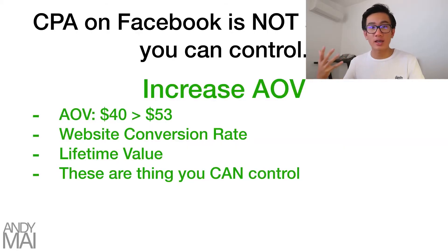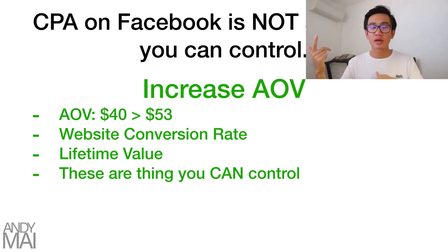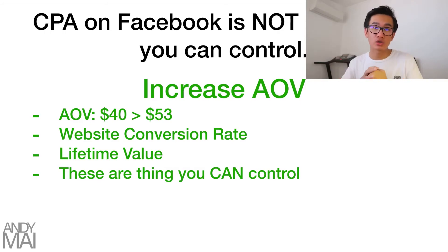On the other hand, increasing AOV is definitely doable. To increase your average order value from $40 up to $53, all you have to do is increase your website conversion rate and increase your lifetime value — things you can control by changing colors, changing layouts, and adding upsells. These are things you can literally do right now. Whereas with Facebook, even if I give you all my strategies, you're not going to drop your cost per acquisition from $20 down to $15.